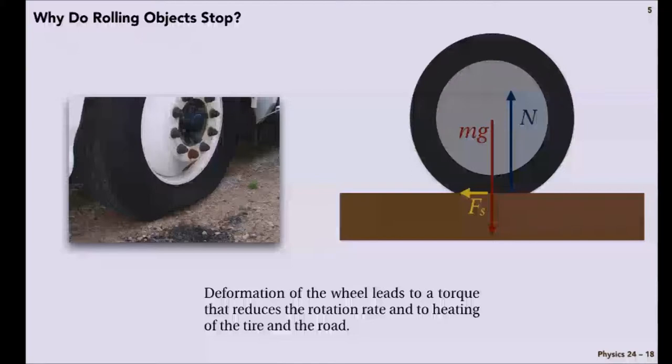What happens in a real wheel? Well, there's going to be some deformation of the wheel and where it contacts the ground. We've assumed that that point of contact didn't have any finite width.